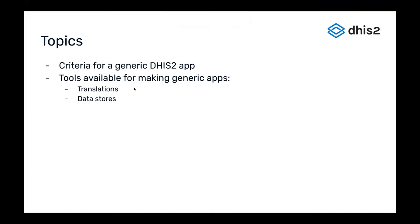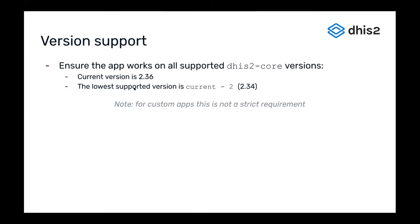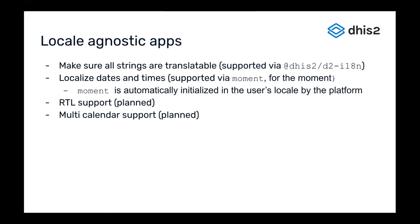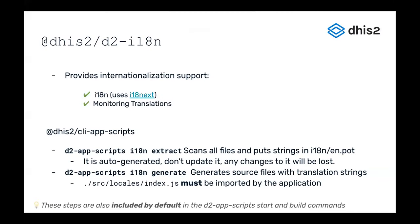Okay, let's talk a bit about translations. I18N stands for internationalization — there are 18 letters between I and N, which is why it's called that. Underneath the hood, our internationalization system uses something called i18next.